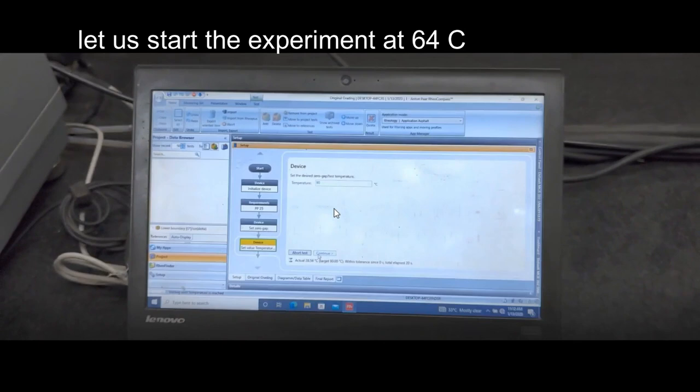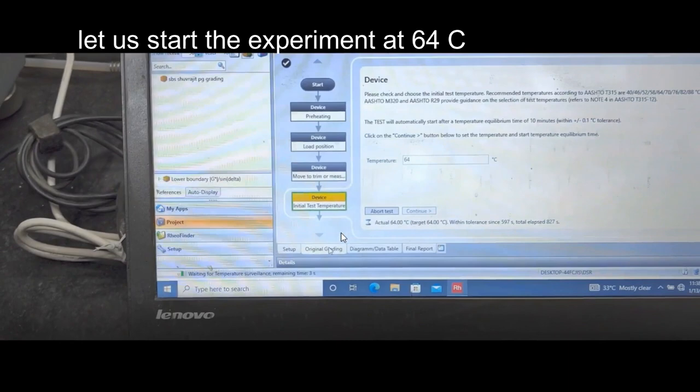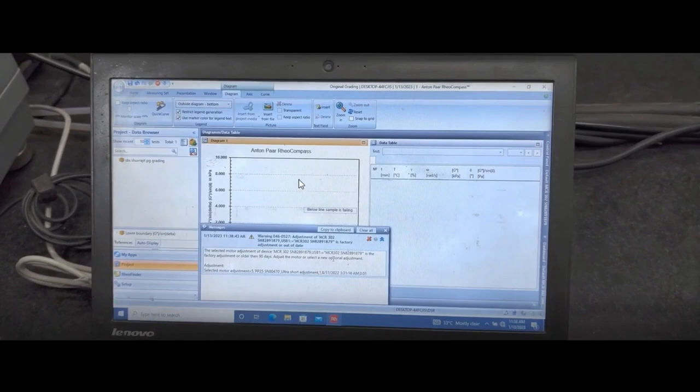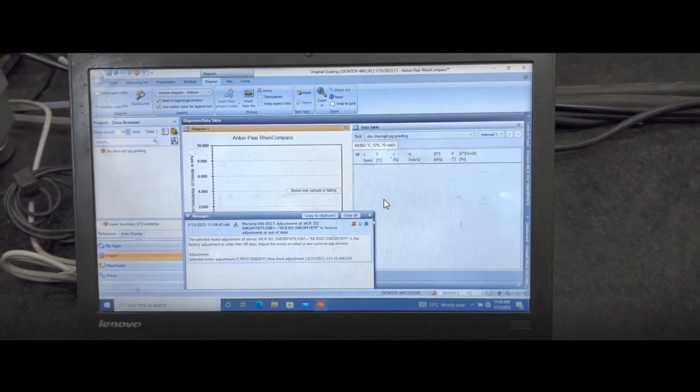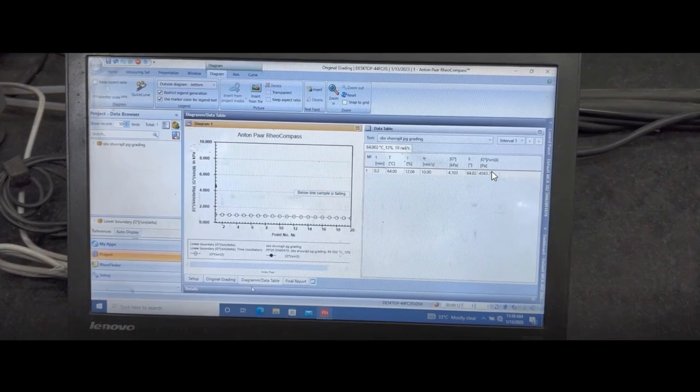Once it reaches 64 degrees Celsius or your test temperature, the experiment will start automatically. So you have a graph here and you have a table here. This table will give you the temperature, the load, the frequency, G*, and here delta.